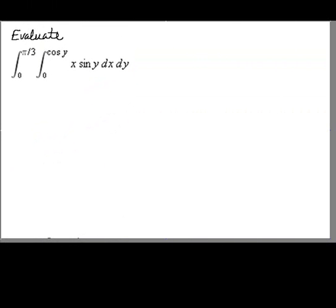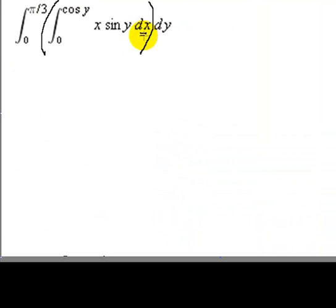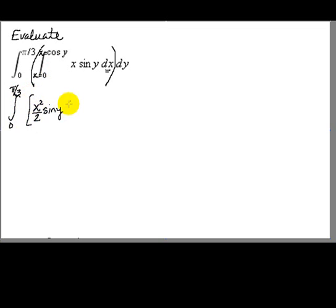The first thing we need to do is think about separating this into two partial integrals. We're integrating the inner integral first with respect to x, so these bounds are x values, ranging from x equals zero to x equals cosine of y. We hold y constant as we let x vary, so sine of y is also constant. The inner integral becomes x squared over two times sine of y, evaluated from x equals zero to x equals cosine of y.